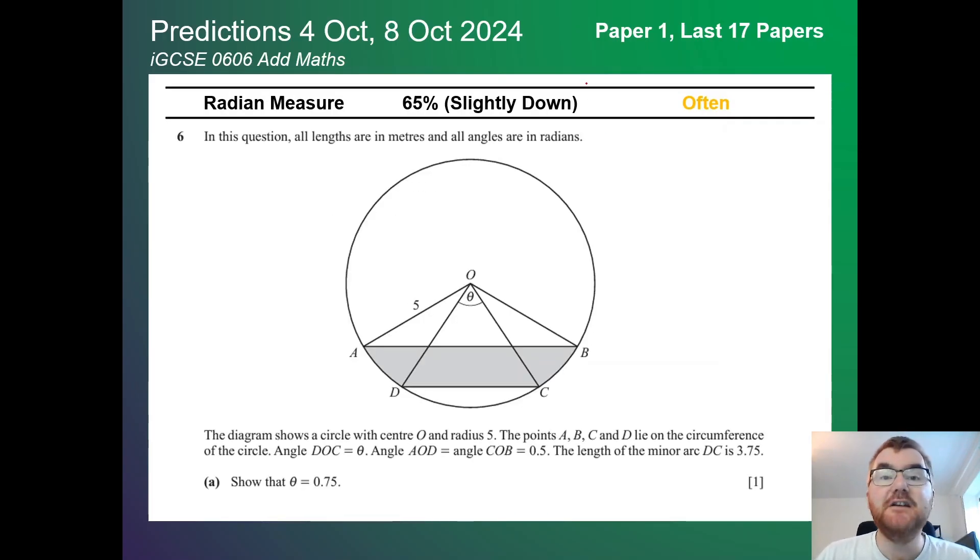Then we have radian measure here. It's slightly down at 65% but still in the often category. It fluctuates usually between often and almost certain. These questions can be actually slightly tougher than some of the A-level maths paper 1 questions. You can see a typical question right in front of you. Remember we are working in radians. Notice there's no degree sign here. That is important.